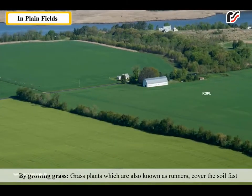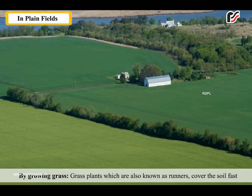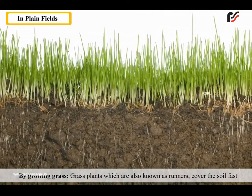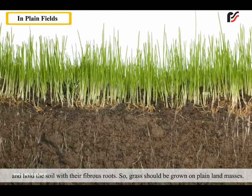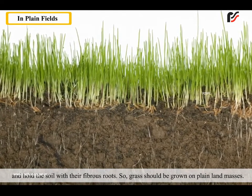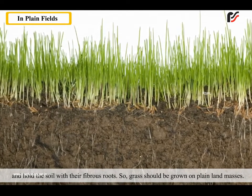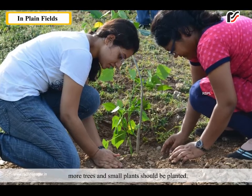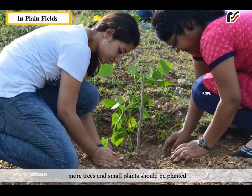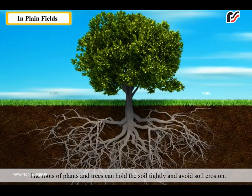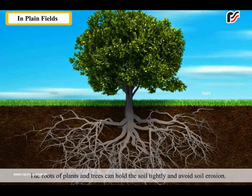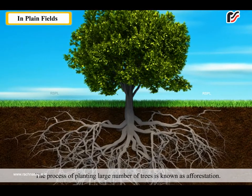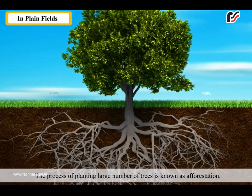Let us see how the following methods help us to control soil erosion. In plain fields, by growing grass — grass plants, which are also known as runners, cover the soil and hold the soil with their fibrous roots. So grass should be grown on plain land. By growing more plants and trees — to save the topsoil, more trees and small plants should be planted. The roots of plants and trees can hold the soil tightly and avoid soil erosion. The process of planting a large number of trees is known as afforestation.